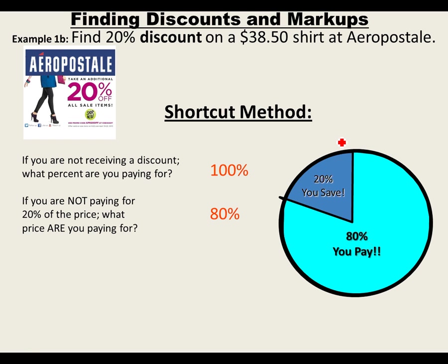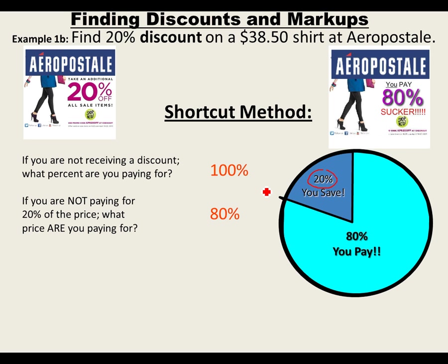So the shirt was originally $38.50 and you're not paying for 20% — we just get rid of that part. Instead of finding 20% and subtracting it, we're just going to find 80% of $38.50 directly.